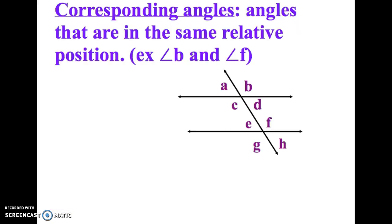Corresponding angles, those are angles that are in the same relative position. So if you look at these parallel lines, here's one, I'll make one red and one blue. For example, B and F, they are called corresponding angles.